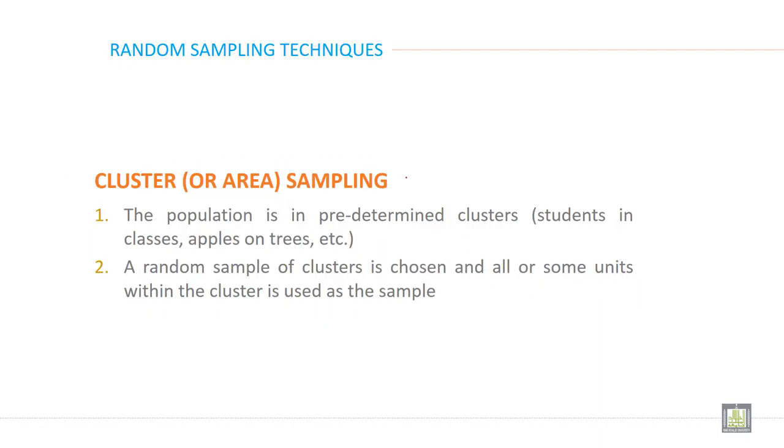Then cluster sample - this is the fourth type of probability sample. The population is in predetermined clusters: students in classes, apples on trees, etc. A random sample of clusters is chosen and all or some units within the cluster are used as the sample.